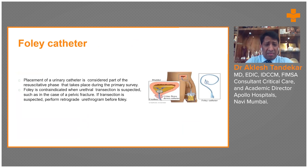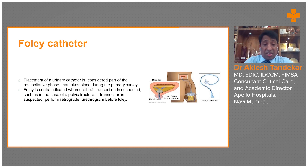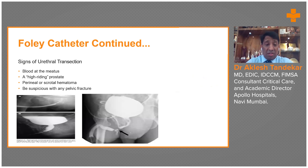Urine output is one indicator of adequacy of resuscitation, but Foley's catheter is contraindicated if there is blood through the urethral meatus, which suggests urethral injury and the possibility of pelvic fracture. If such a doubt exists, a retrograde urethrogram should be done before passing the Foley's catheter. If Foley's catheterization is not possible, a suprapubic cystotomy is sufficient to monitor urine output, and urethral injuries can be repaired later.